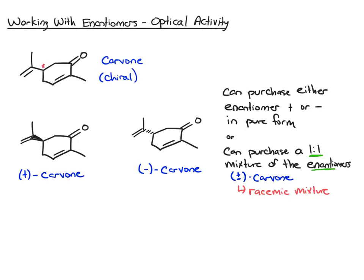Where do these plus and minus values come from? These two enantiomers have physical properties you can measure. You can take the melting point — they're both 25 degrees Celsius. You can get the boiling point — they both boil at 231 degrees Celsius. So the properties of the two enantiomers are identical so far. But there is one physical property that is different, and that has to do with the chirality of these molecules: the optical rotation.